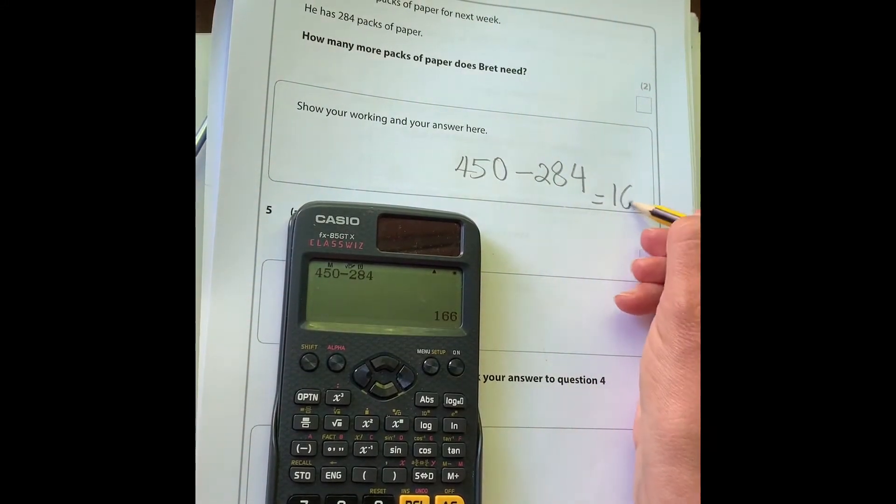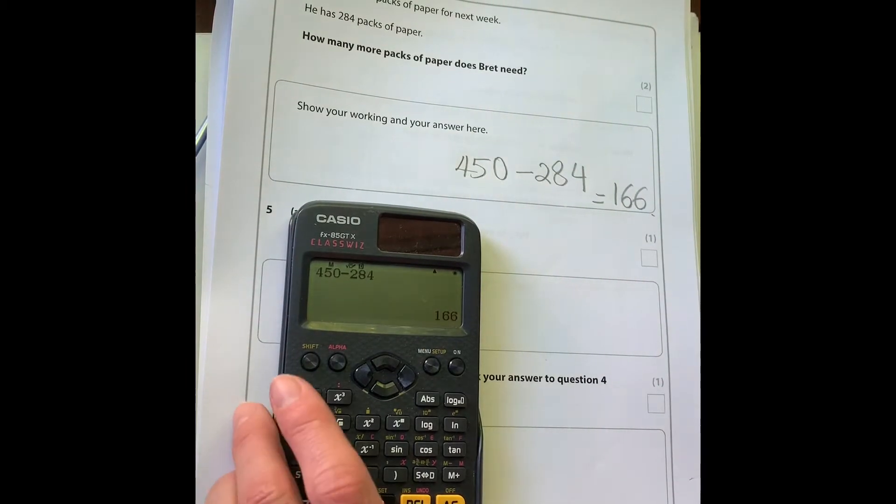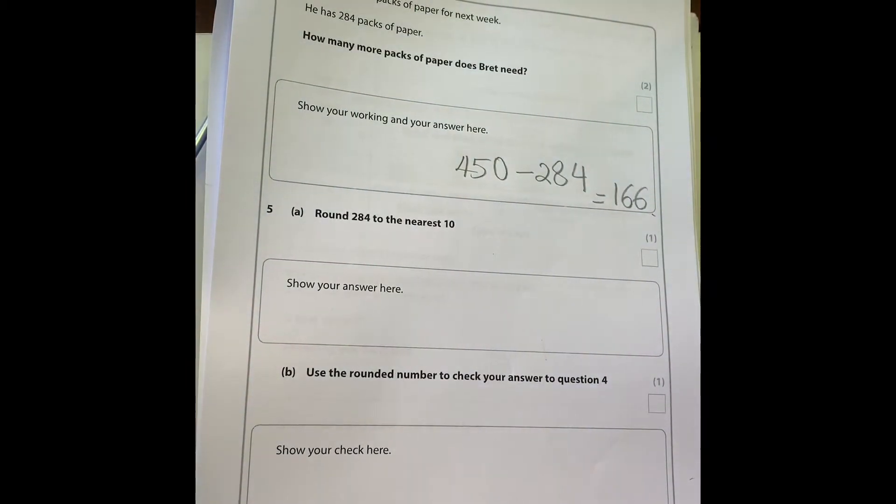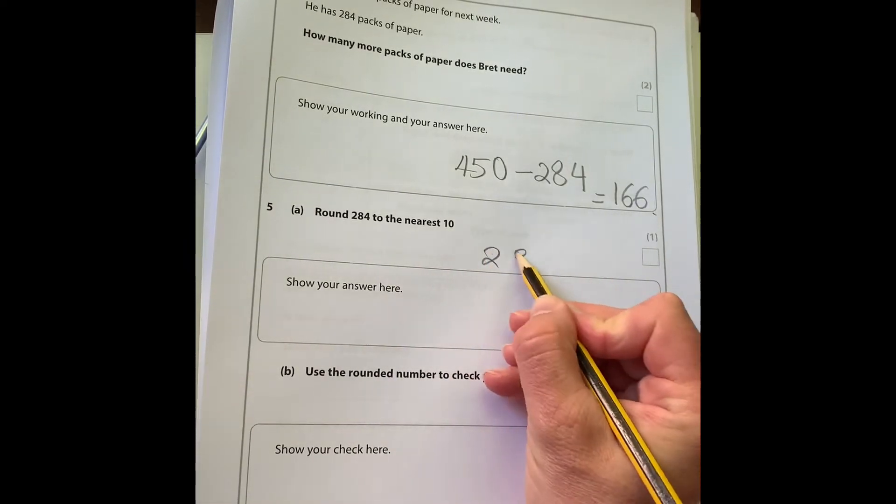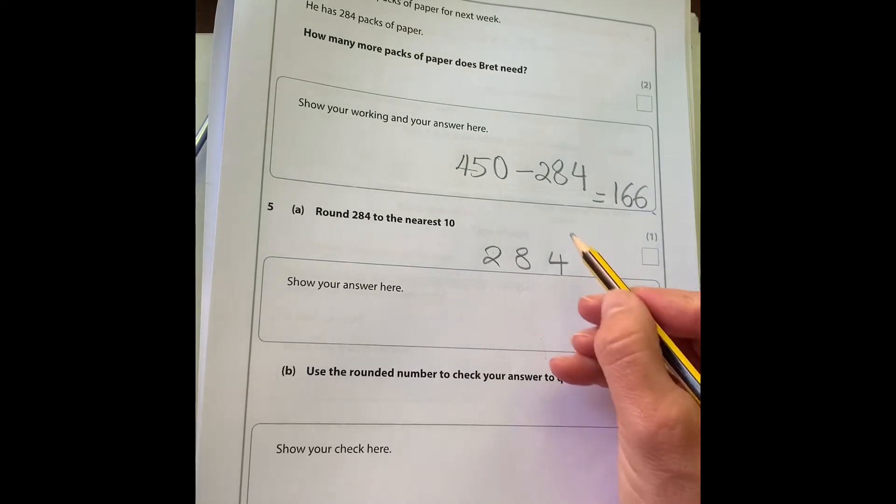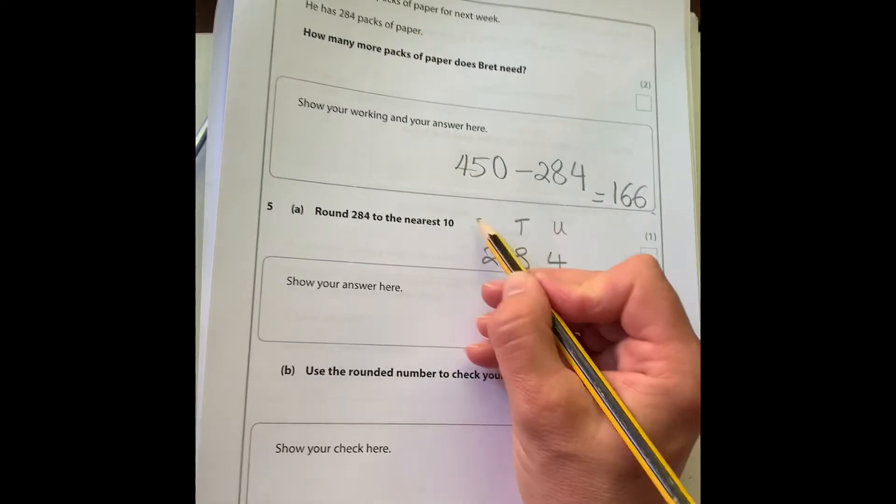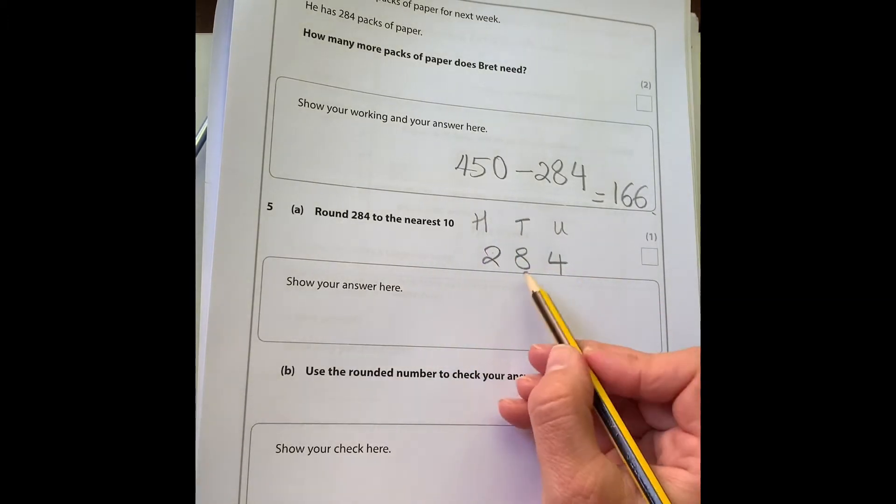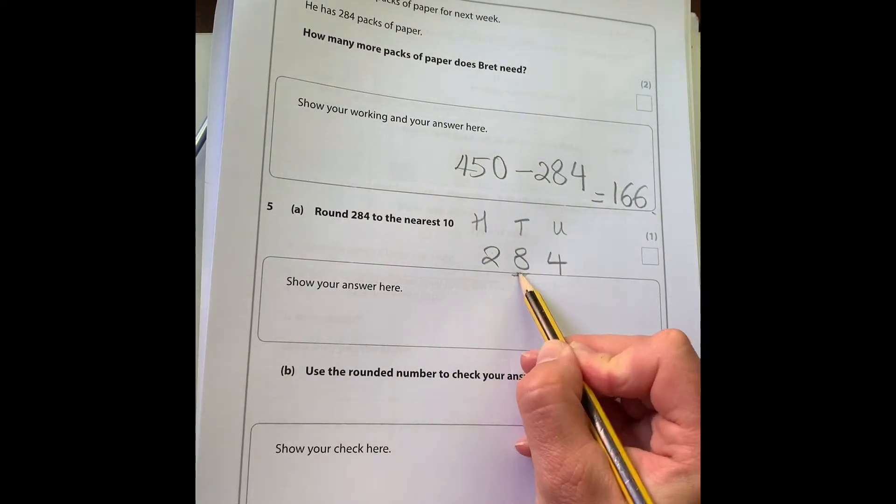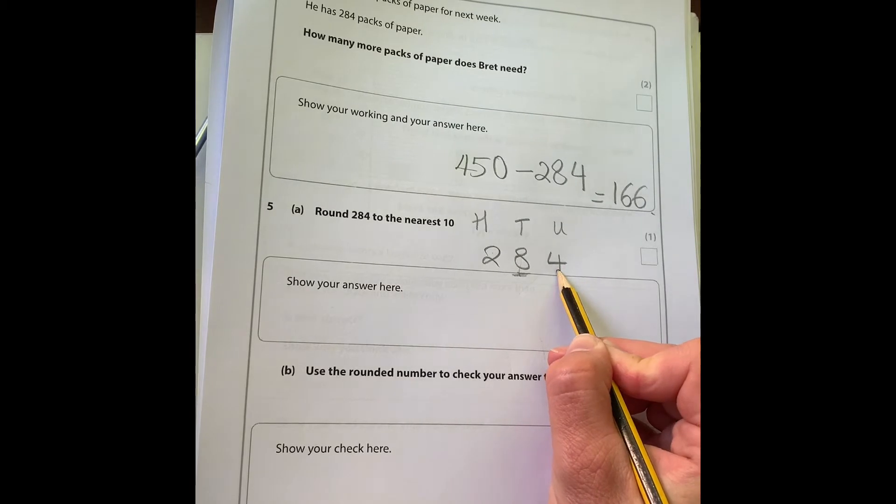Next question: round 284 to the nearest 10. We've got our ones, our tens and our hundreds. Because we're doing it to the nearest 10, we're going to look at the number to the right.